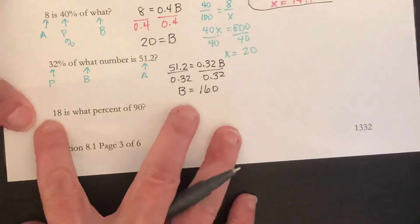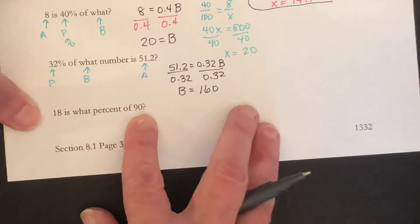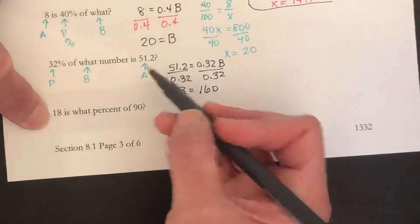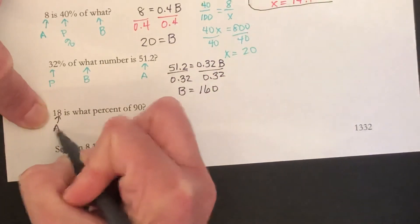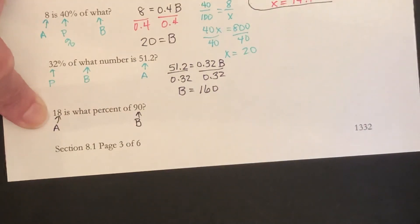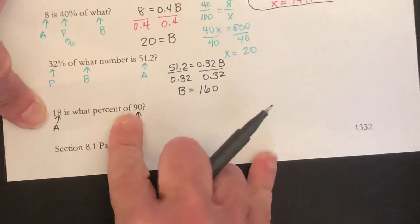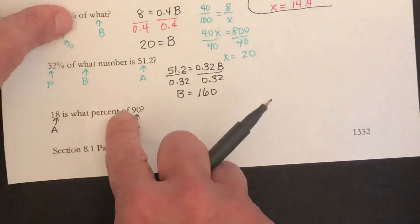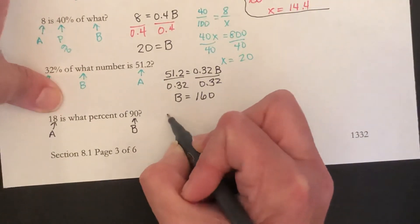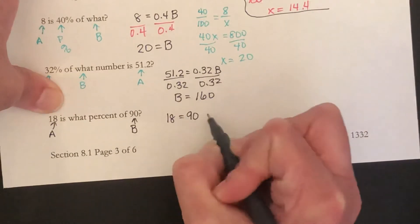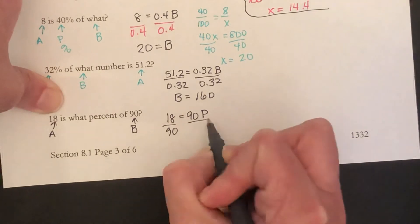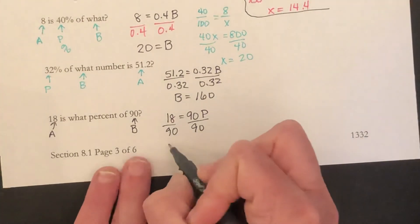Here, 18 is what percent of 90? So we're missing the percentage this time. 18 is, well our is is A, so that's A. What percent of 90? That is our B. By the way, the word of often indicates a multiplication. So percent of 90 is percent times 90, which is the equation we've been talking about. So this is 18 equals 90 times the percent. Divide both sides by 90, and you get 0.2.